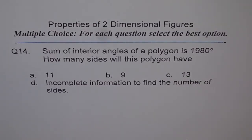Properties of two-dimensional figures. Multiple choice question 14: Sum of interior angles of a polygon is 1980 degrees. How many sides will this polygon have? Choices are 11, 9, 13, or incomplete information to find the number of sides.